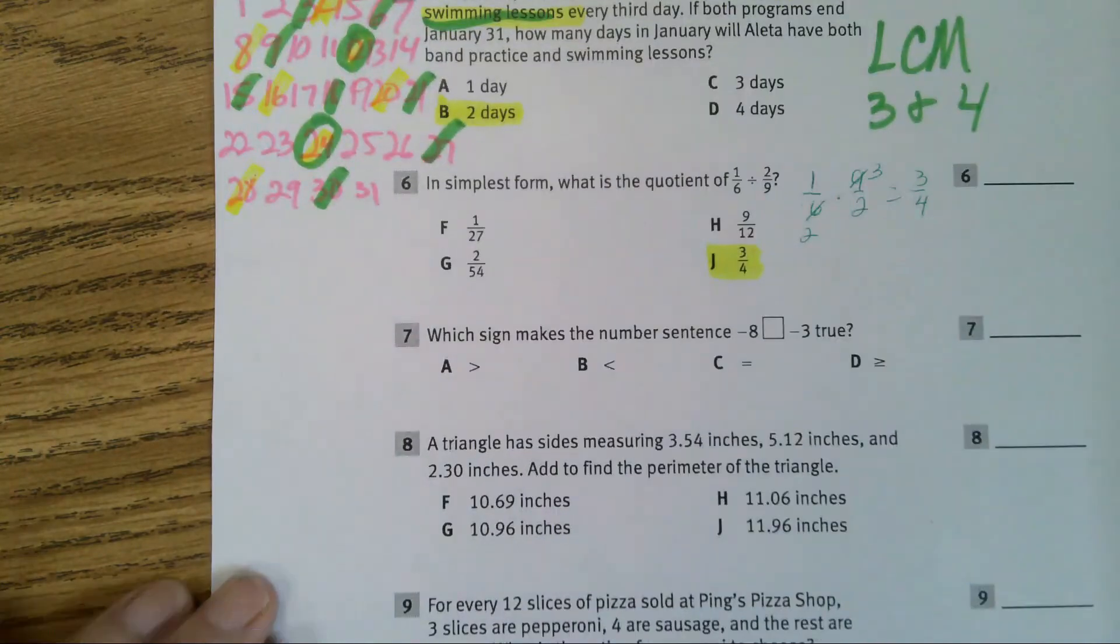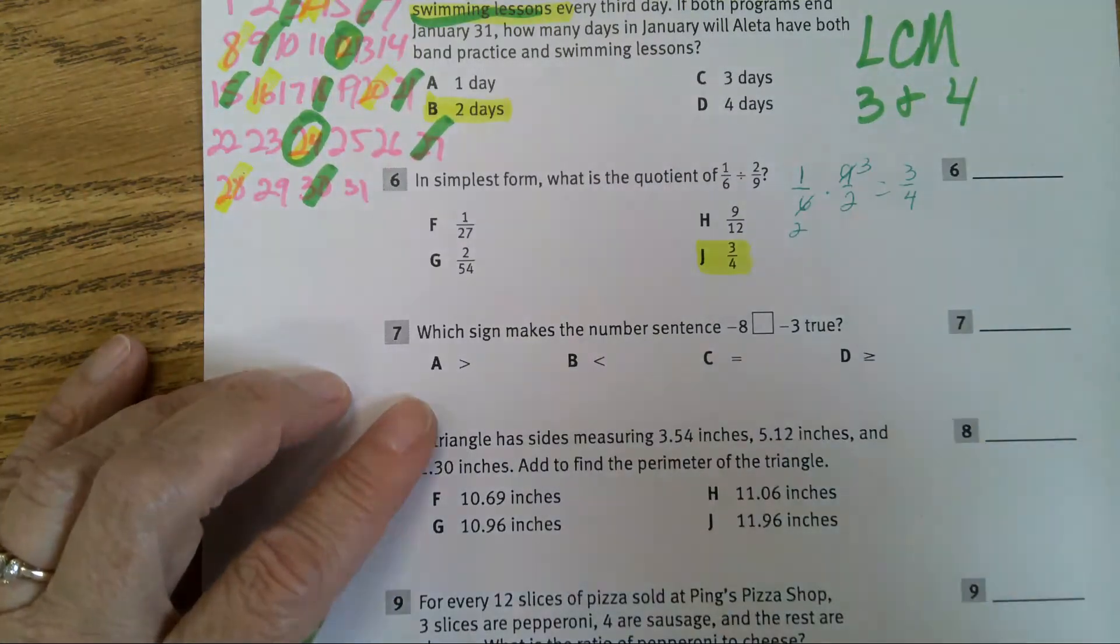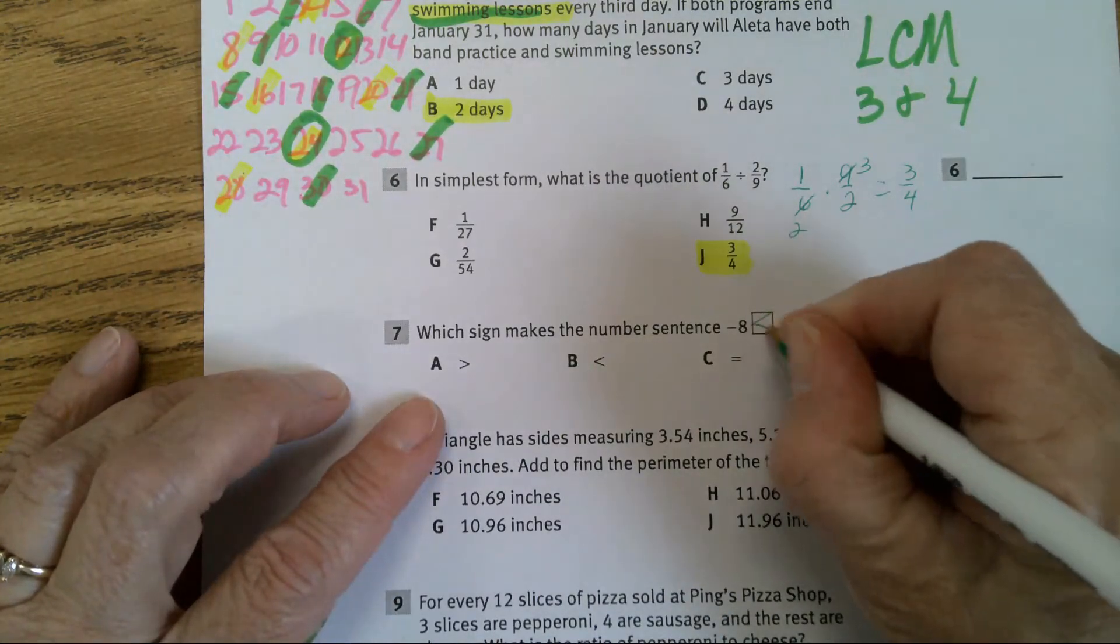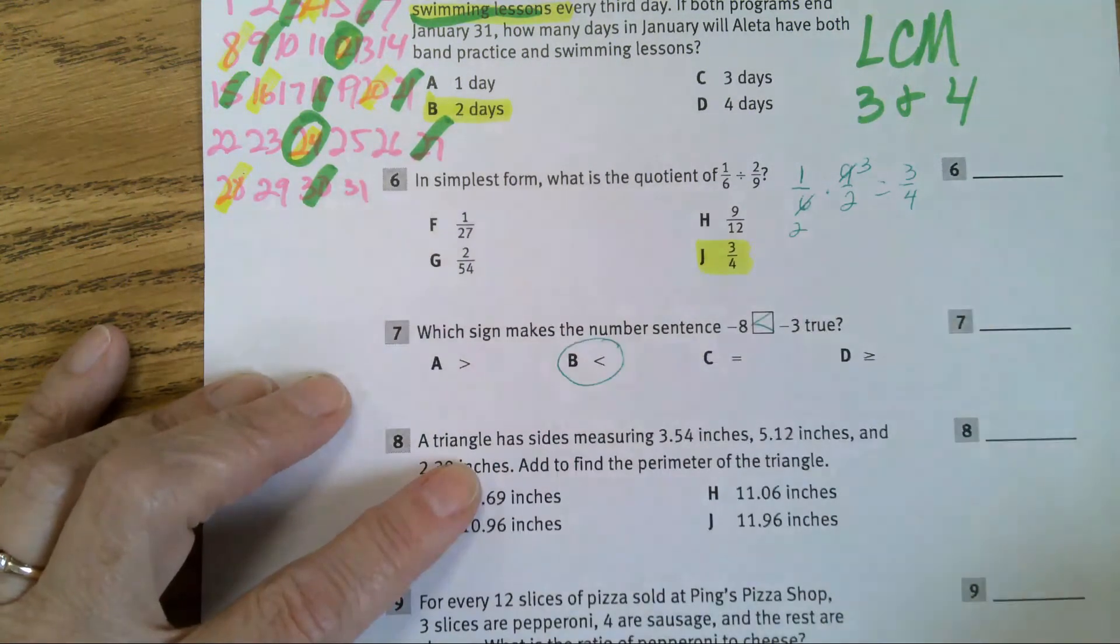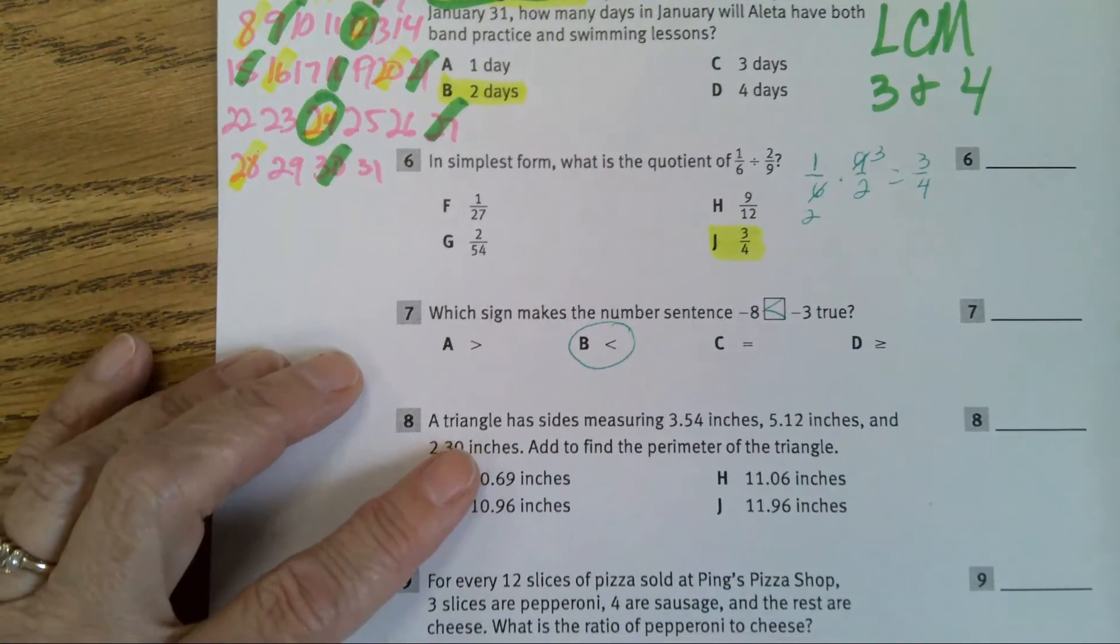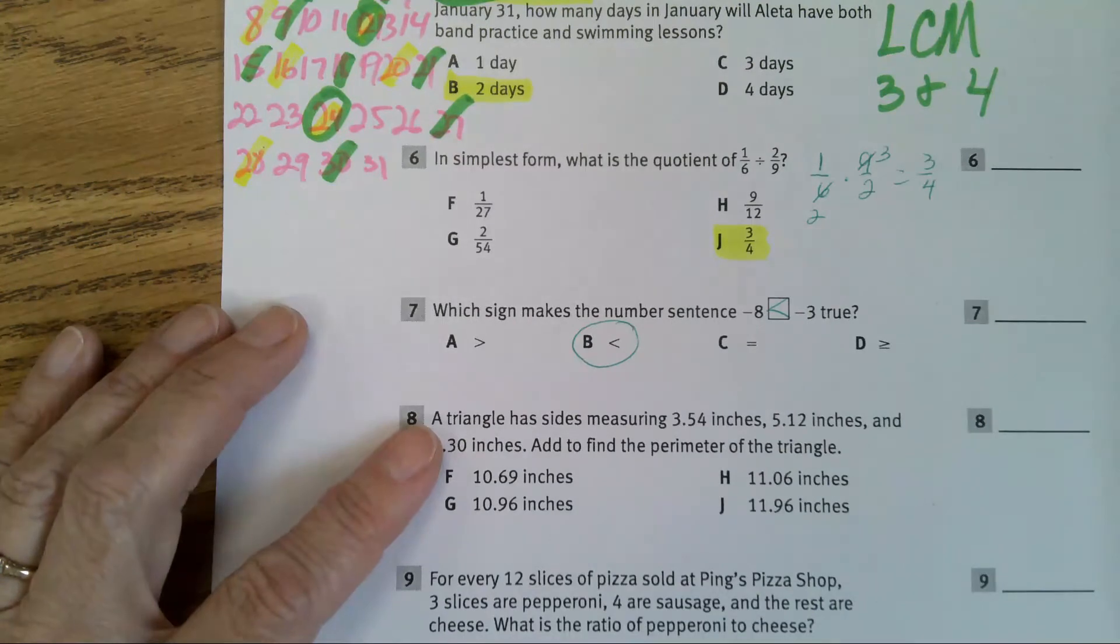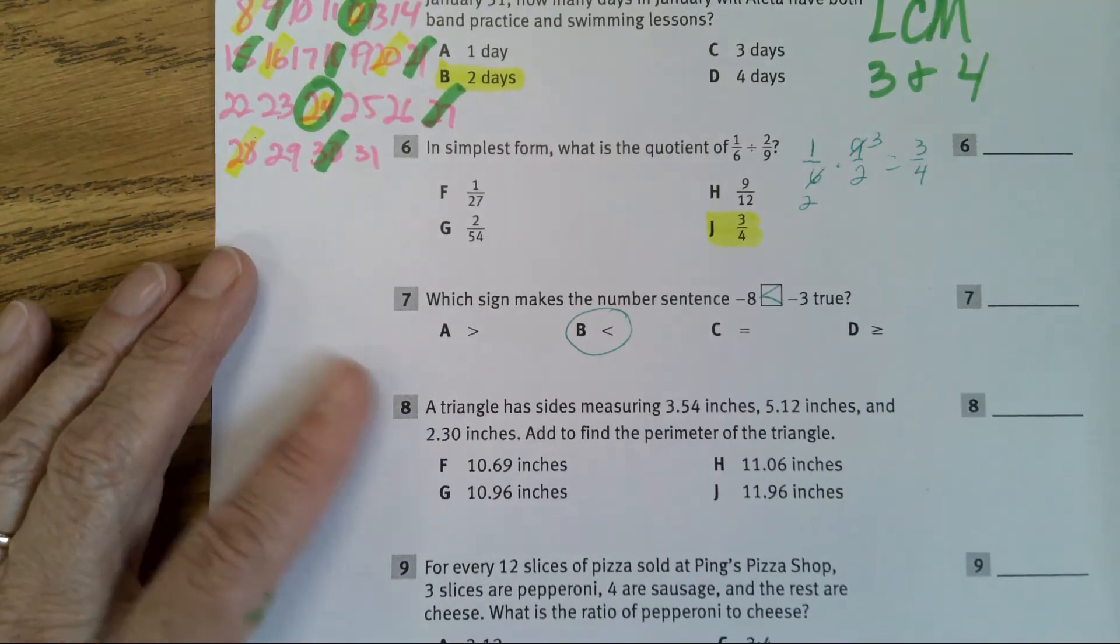In number 7, negative 8 is less than negative 3. The answer is B. If you look at the number line, you can see the bigger the negative number is, the smaller its value.